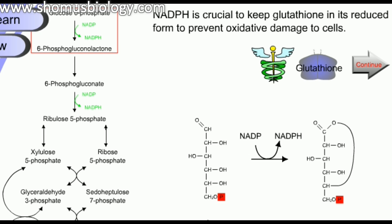Looking at the structural change here, it is not that complicated. There is a change in structural units where a CHO bond is converted to COO, and the hydrogen is donated to NADP to convert it into NADPH.